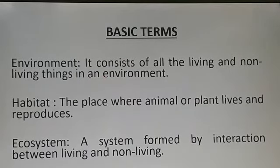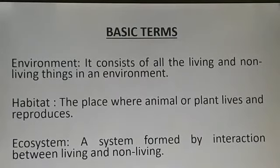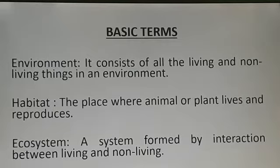Before moving on to the topic, we should revise the basic term environment. It consists of all the living and non-living things present in the environment. Everything around the organism is called environment. Habitat is the place where an animal lives or reproduces. Ecosystem is a type of system which is formed by the interaction of living and non-living things.